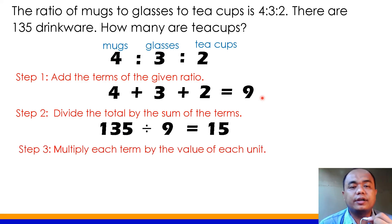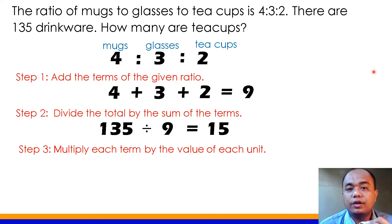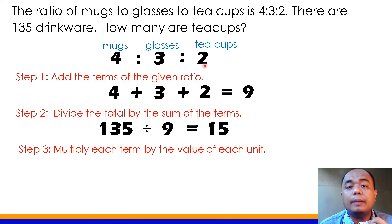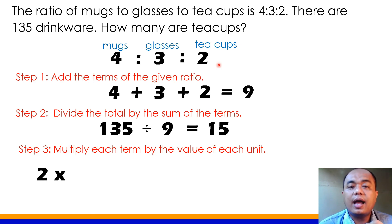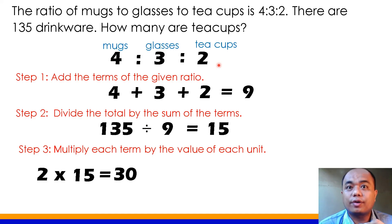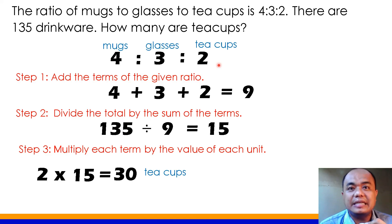Step 3: since teacups ang tinatanong, yung teacup term lang ang imumultiply para mas mabilis ma-solve ang problem. Yung 2 na yan ang gagamitin natin sa pag-multiply ng 15. So, 2 times 15 equals 30. Ang total number of teacups sa problem natin ay 30 pieces.